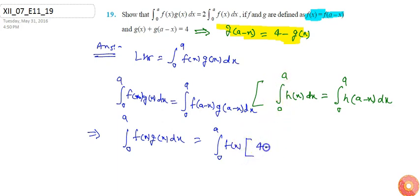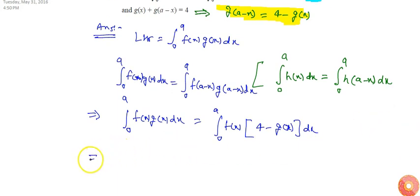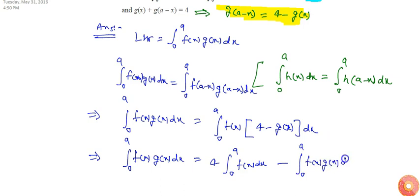(a-x) is 4 minus g(x). So from here I'll get integral from 0 to a of f(x)g(x)dx equals 4 times integral from 0 to a of f(x)dx minus integral from 0 to a of f(x)g(x)dx.